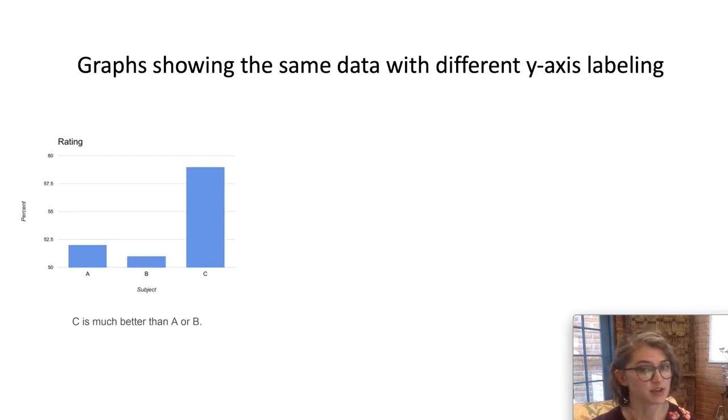Here's an abstract example that breaks down some other potential issues in visualization storytelling. Here is a bar chart with ratings of three abstract objects called A, B, and C. In this graph, we can assume that C is rated more highly and is therefore much better than objects A or B. We might not notice that the y-axis doesn't start at zero, and that we're looking at a very narrow range of numbers here.